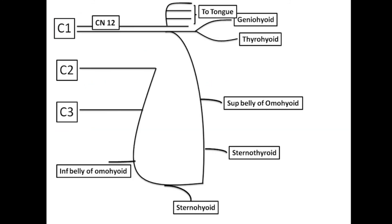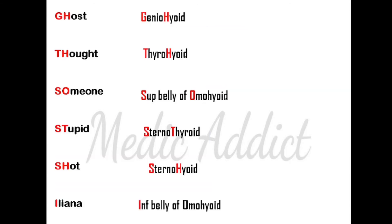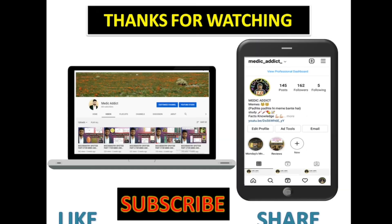Once again, the important thing is to know this diagram — I have shown you in an animated way exactly how to draw it. Remember this mnemonic: 'Ghost Thought Someone Stupid Shot Iliana' — that is geniohyoid, thyrohyoid, superior belly of omohyoid, sternothyroid, sternohyoid, and inferior belly of omohyoid. Omohyoid, sternothyroid, and sternohyoid are the infrahyoid muscles.